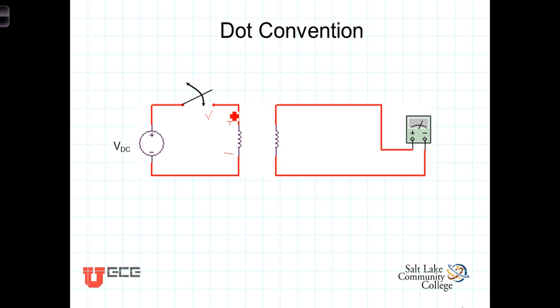So if when we close the switch here, the meter goes positive, it means that we've got a positive to negative voltage that's induced here. And under those circumstances, we would put a dot here and a dot there, which would represent that a positive voltage at this terminal here would induce a voltage that would be positive at that terminal there.